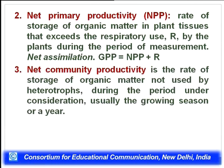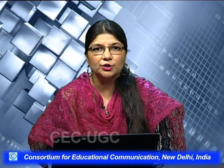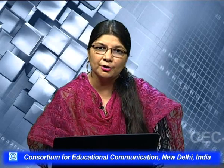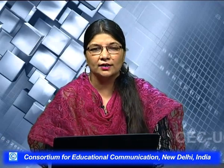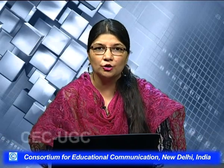The third step is net community productivity: the rate of storage of organic matter not used by heterotrophs during the period under consideration, usually the growing season or a year. Whatever energy passes from plants to consumers, the consumers will use energy for their own maintenance. What they do not utilize is accumulated — not synthesized by them but stored — and this is called net community productivity, which is what is not utilized by heterotrophs.